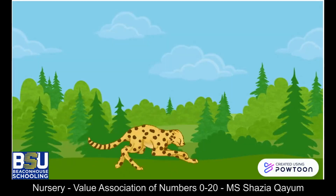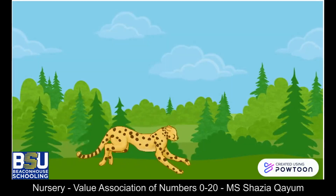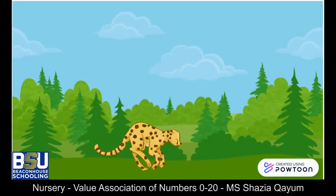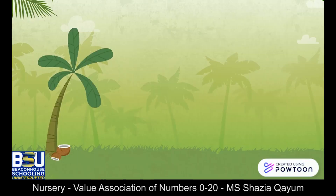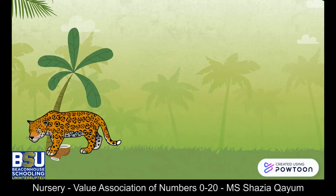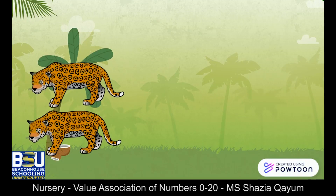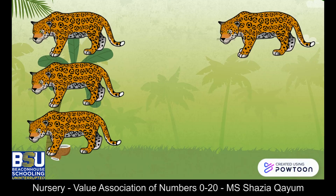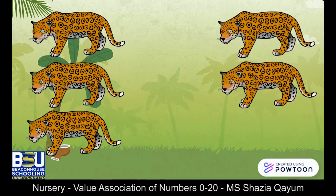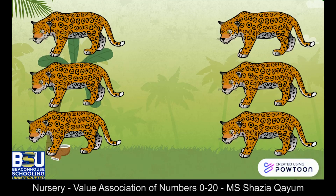Let's see how many cheetahs are here. One, two, three, four, five, six. We have six cheetahs in the jungle.